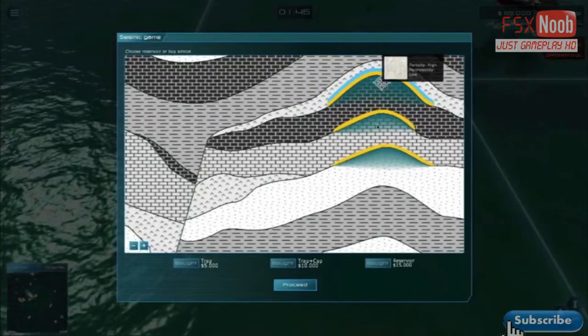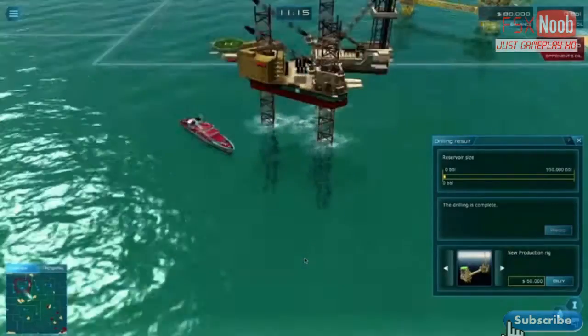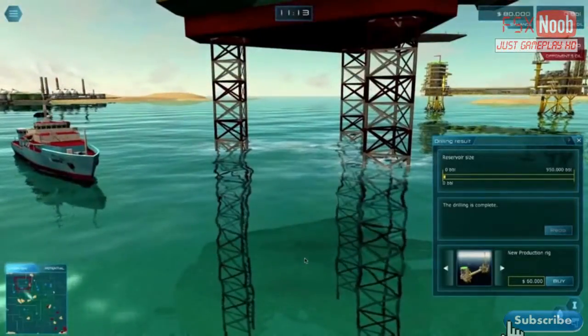Permeability of rock determines how easily the oil can move through it. Porosity is an indicator for how much oil you might find.